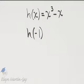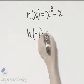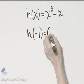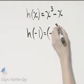Here is our given function, h of x. I'd like to find h of negative 1, so everywhere there's x, I'll replace x with negative 1.